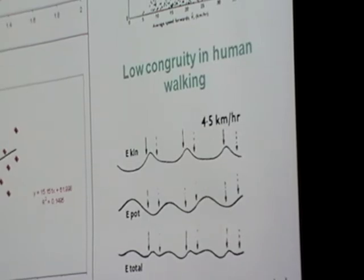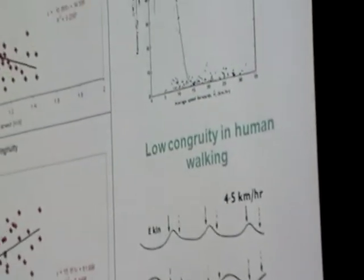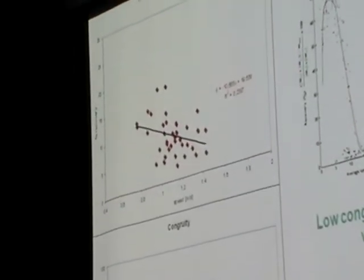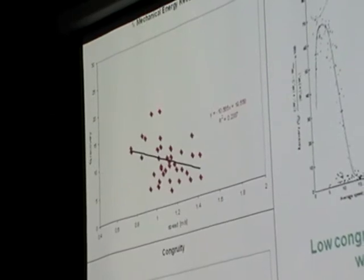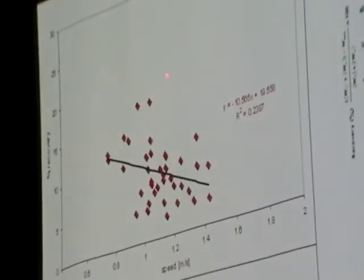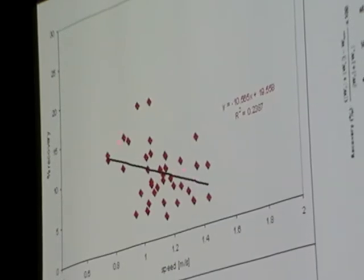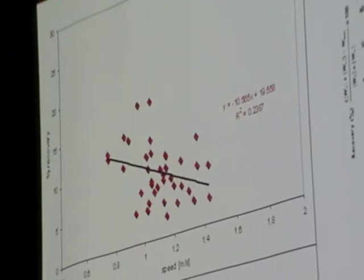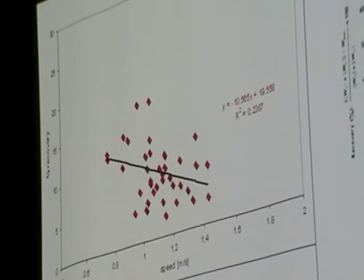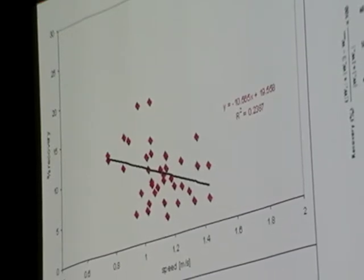And now let's look at the capuchin data. This is percent mechanical energy recovery as a function of speed. You see that the highest values are somewhere at about 20% or so, and most of these values are much lower. On average they are below 10%. That has to do with the fact that the kinetic and potential energies in capuchin bipedalism, they fluctuate pretty much in phase, so we have very high congruency values here, up to 90%. On average there is 80%, so that's very different from what you see in human walking.